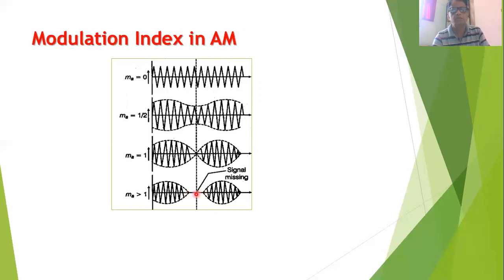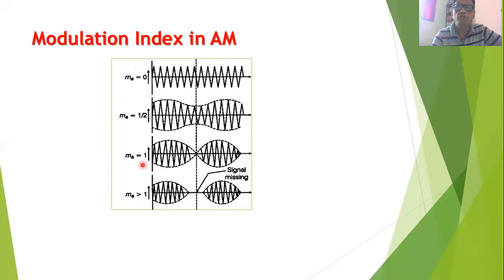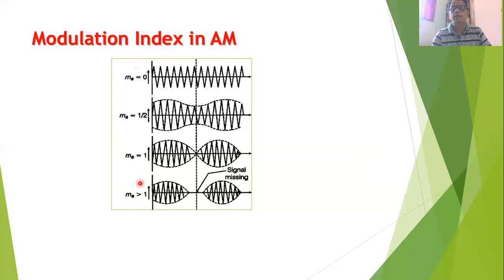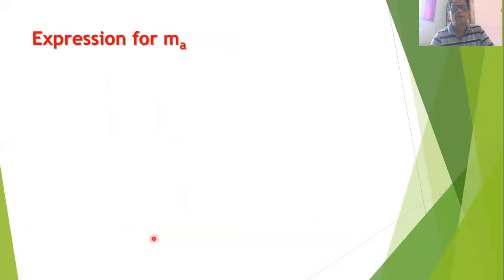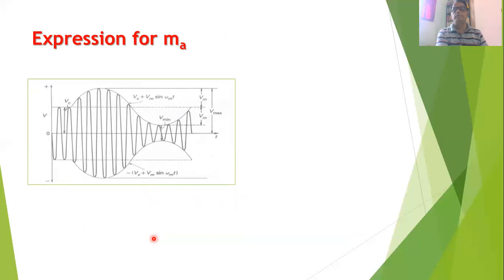When m_a is greater than 1, the signal will be missing over certain portions, causing distortion. Since m_a = Vm / Vc, keeping m_a equal to 1 means Vm equals Vc, but when Vm exceeds Vc, distortions are produced in the AM signal. Therefore we should avoid this case and set m_a to at most a value of 1.